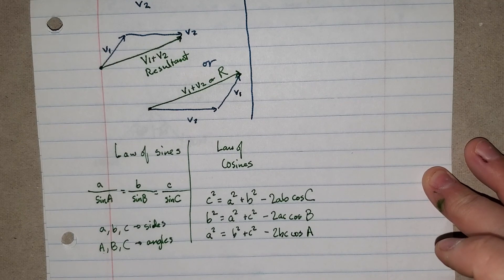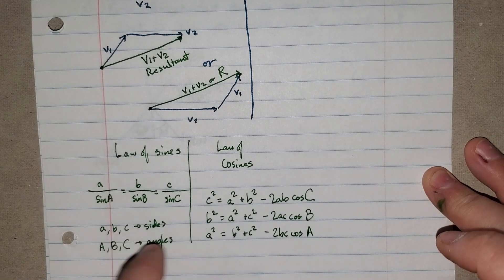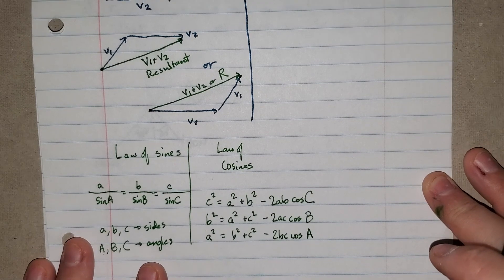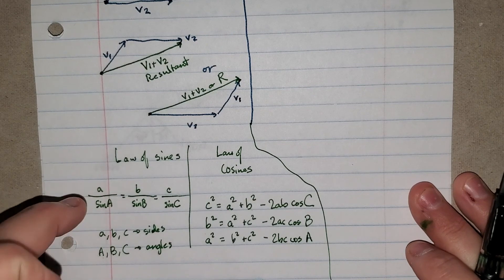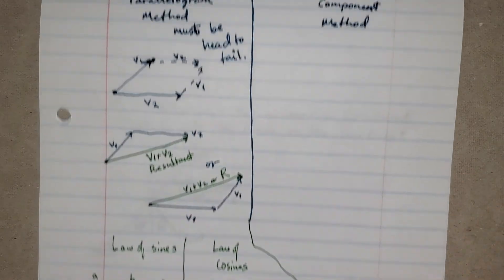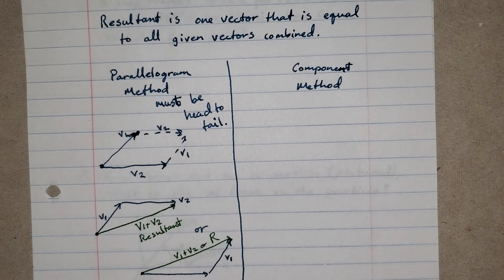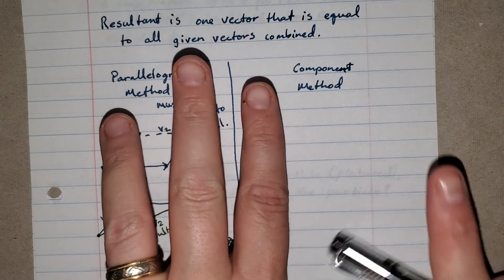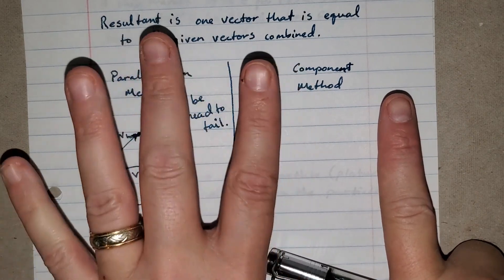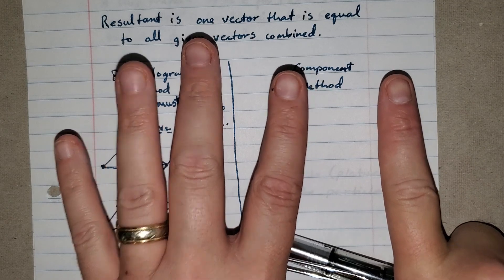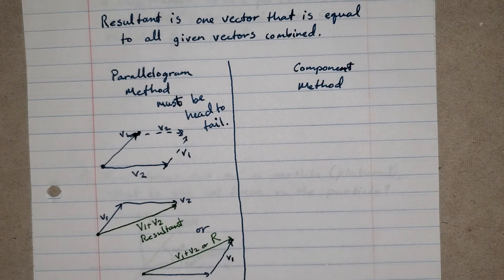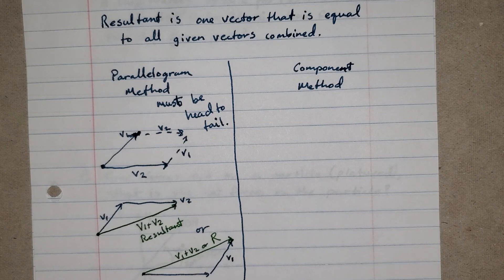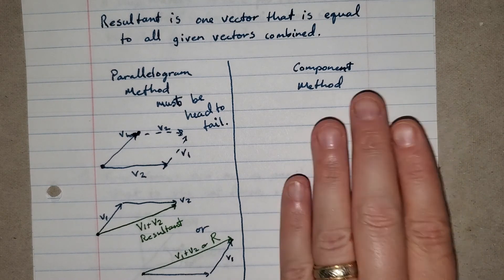If you're dealing with two vectors and trying to find a resultant, you can use triangles and the methods you've learned to solve them. However, I'm not a fan of this method. Typically in engineering we have more than two vectors. Two vectors and a resultant make a triangle, but three vectors and a resultant make a four-sided figure, and we don't have formulas for four-sided figures. So this only works if you have two vectors and a resultant. If you have more, you need the component method.